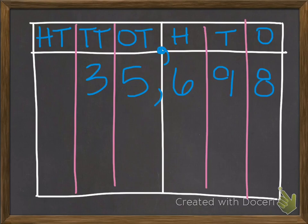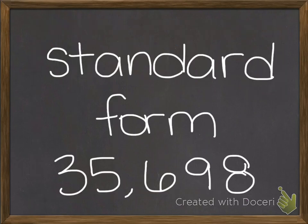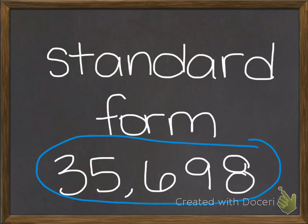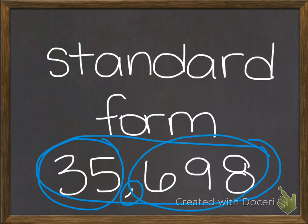Let's look at our different word, expanded, and standard forms. First of all, the standard form of any number is simply the digits written out, like you would see in a normal number. This number here is thirty-five thousand six hundred ninety-eight. This is the standard form.